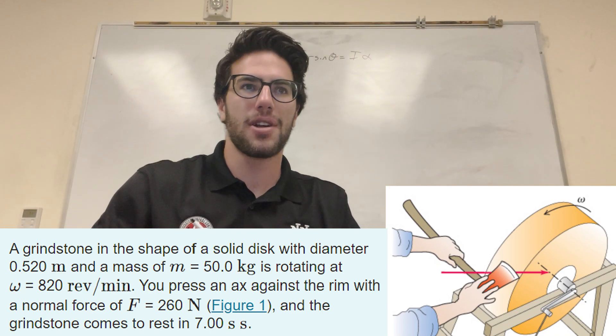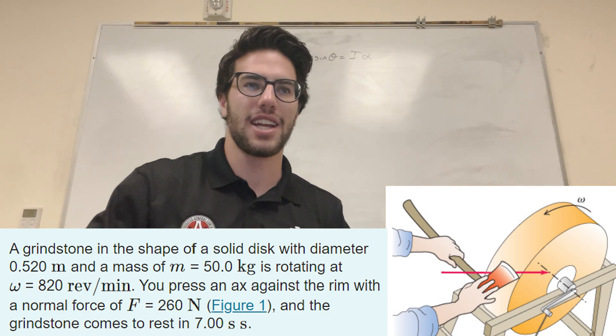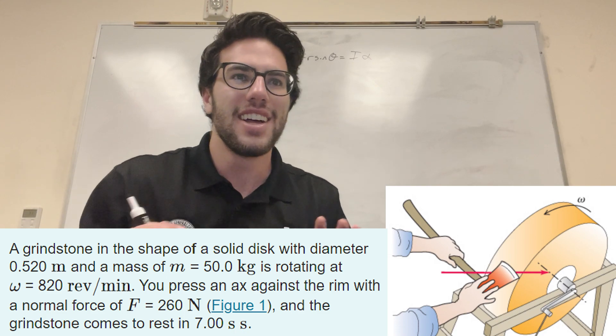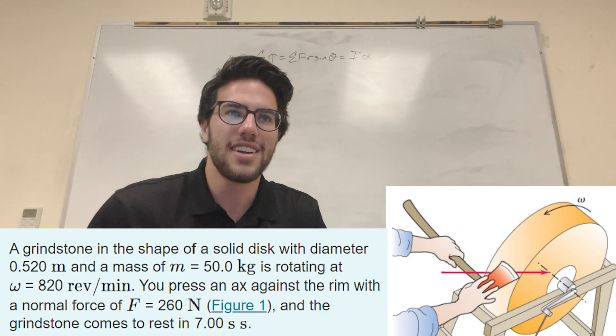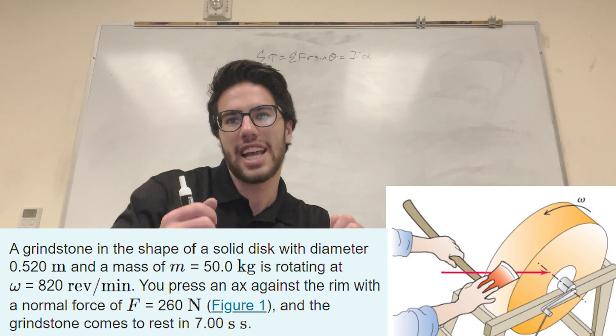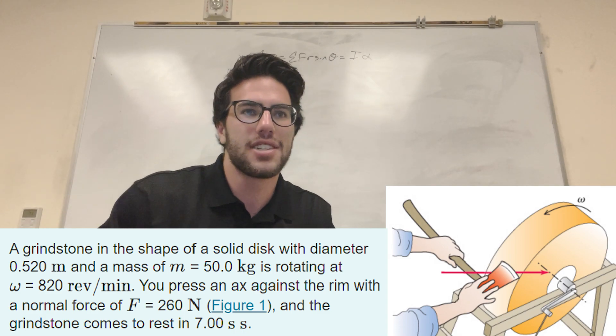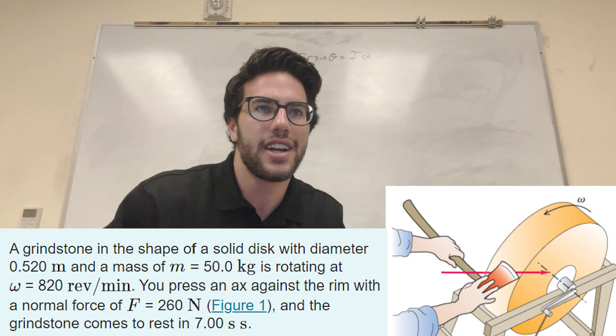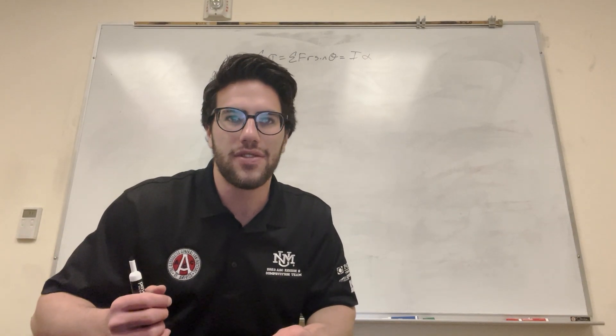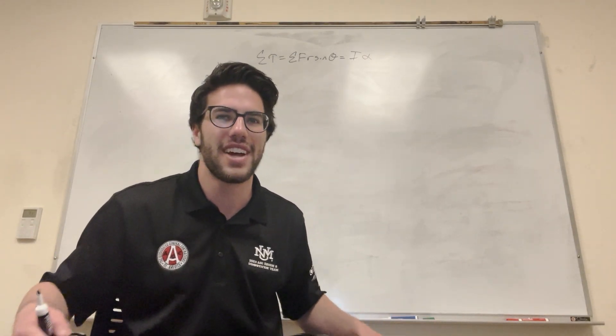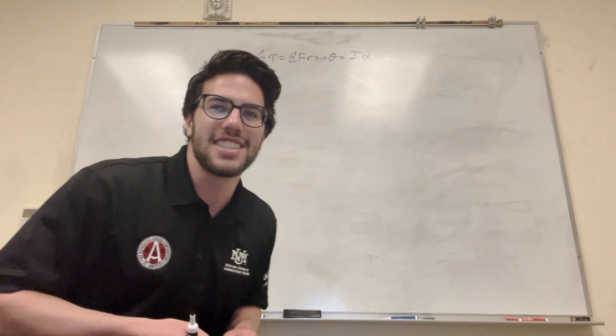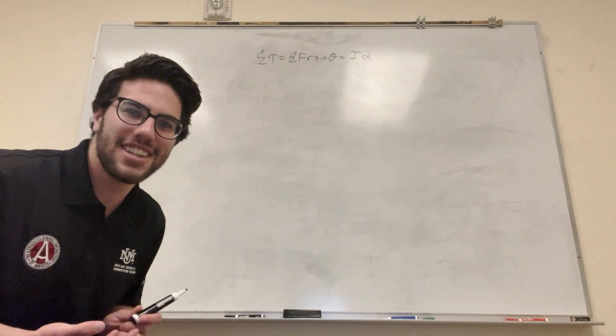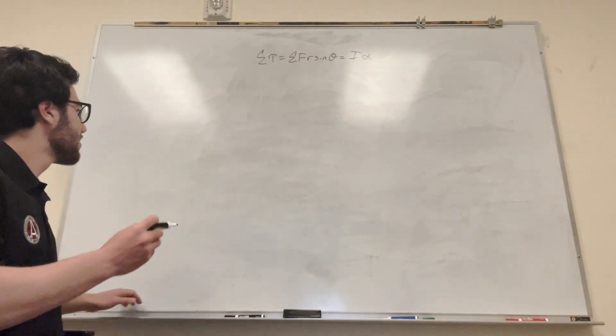What's up Cal Gang? Alright we got this problem here. I'm gonna keep it on the page because I don't really want to try to draw it. Okay so a grindstone is turning and you're pressing this axe against it. It comes to rest in seven seconds and it wants us to find the coefficient of friction. I always love trying to find the coefficient of friction because it's fun. Not really, but let's try to visualize what's happening here by drawing a picture.